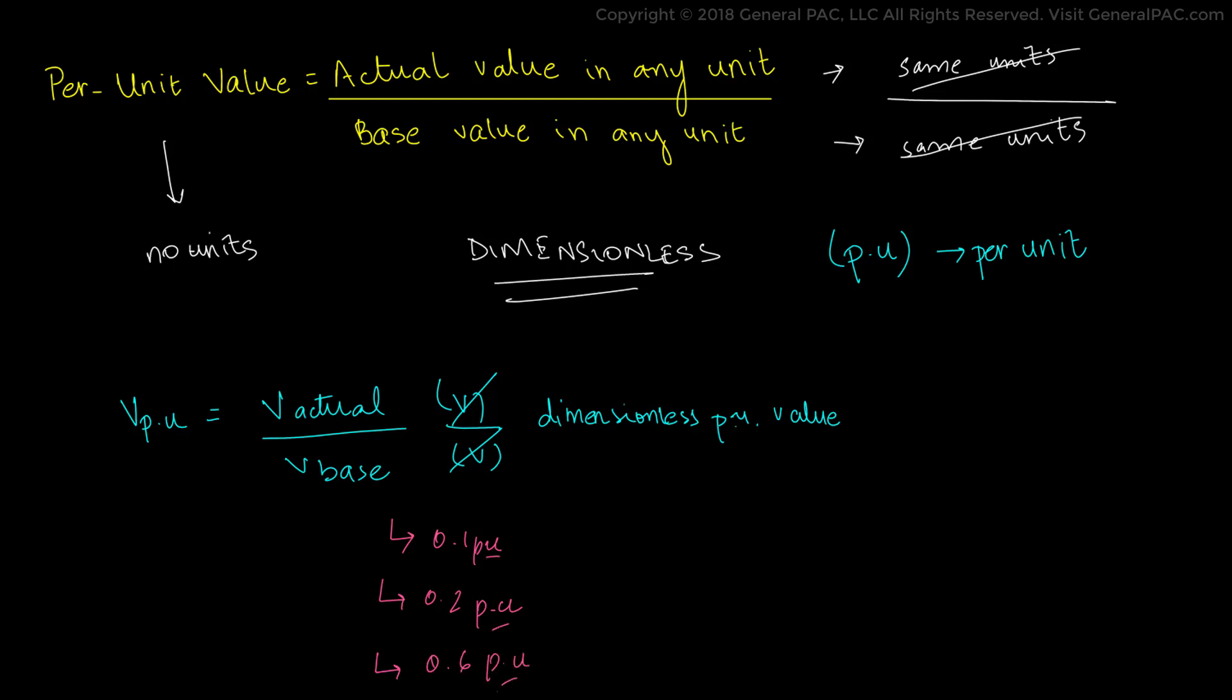Coming to the base value. Now base values are rated values of the equipment like ratings of a generator or a transformer. Normally we select base values of voltage and the apparent power to carry out per unit calculations.